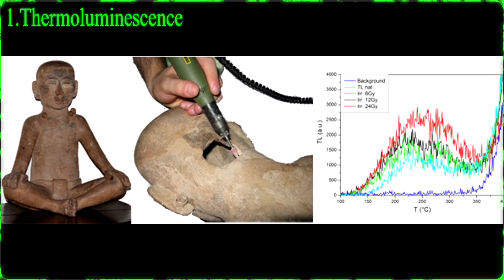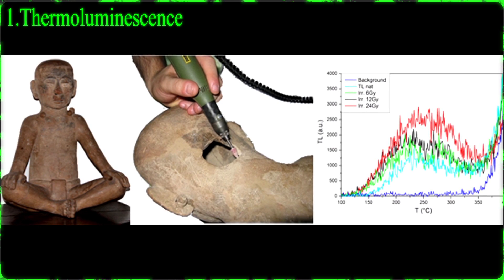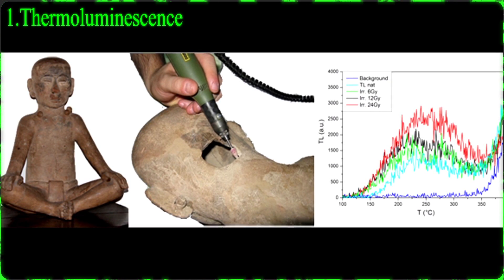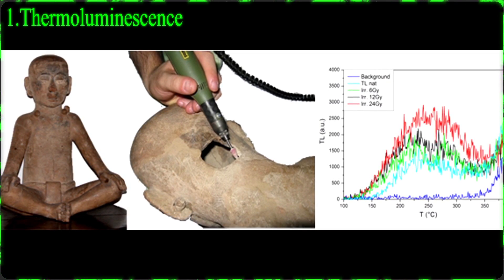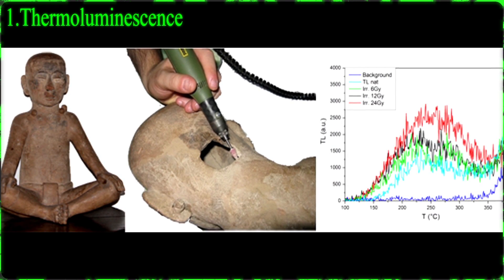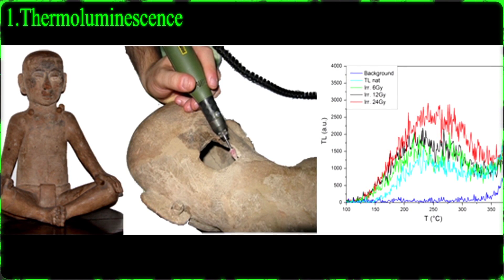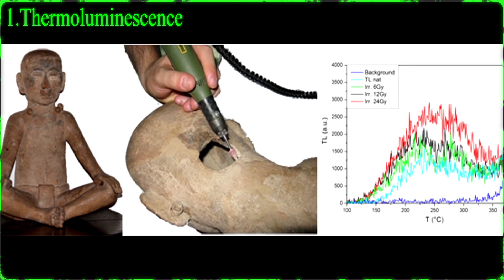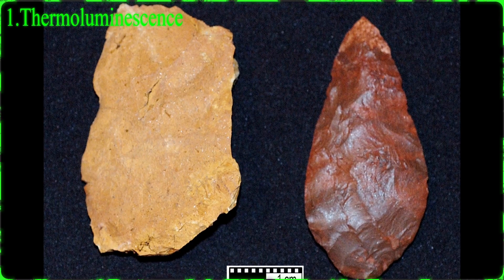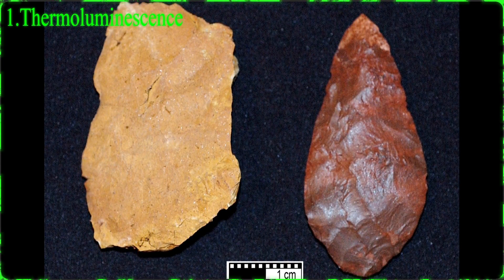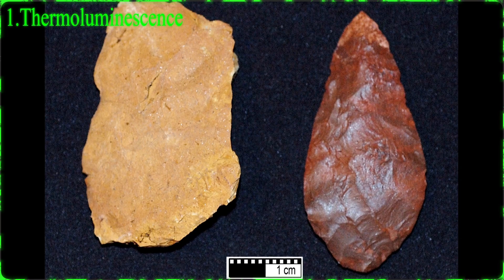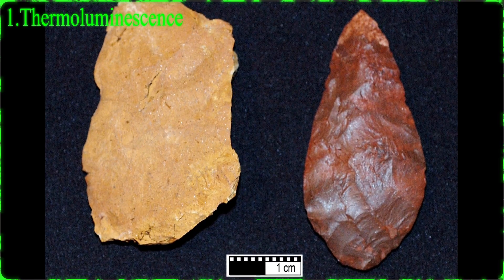Number 1: Thermoluminescence dating. This dating method has practical applications when it comes to rocks and ceramics due to the high heat that needs to be used. When radiocarbon dating is impractical, this method is the next step. The natural crystalline materials contain imperfections.